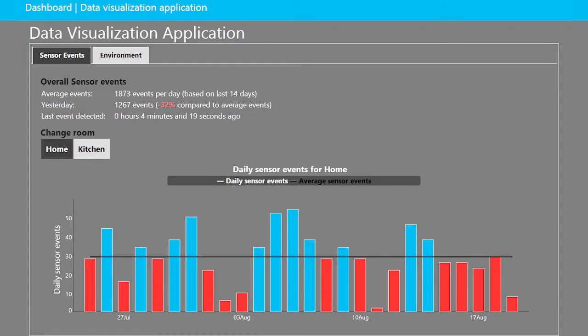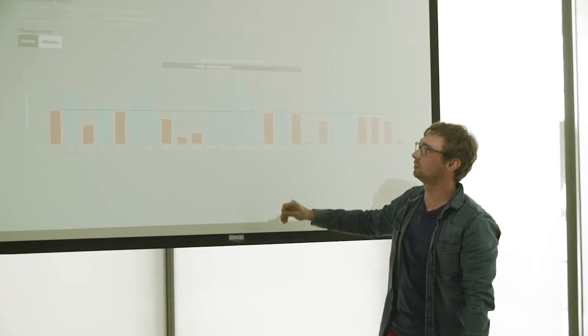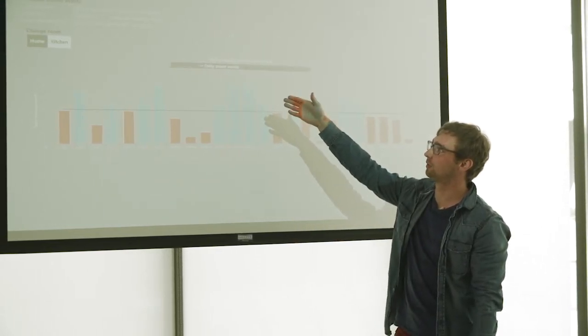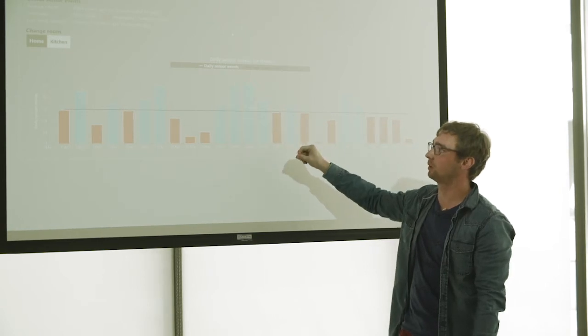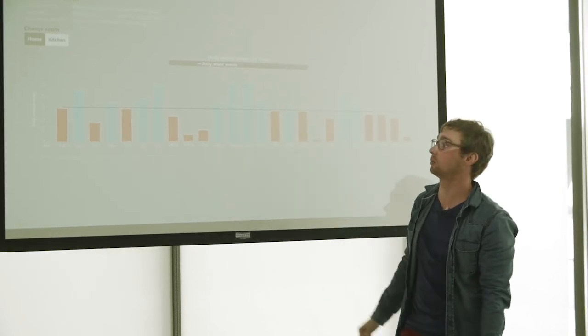Right now I want to jump into a live demo of the system. This is the first view you receive if you open the application. You have an overview about the average events based on the last 14 days, the comparison of these average events to the count of yesterday's events, and also information about when the last event was detected.